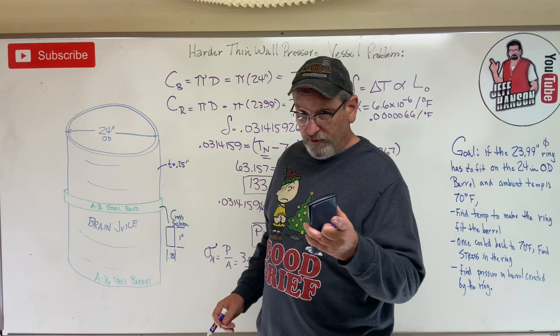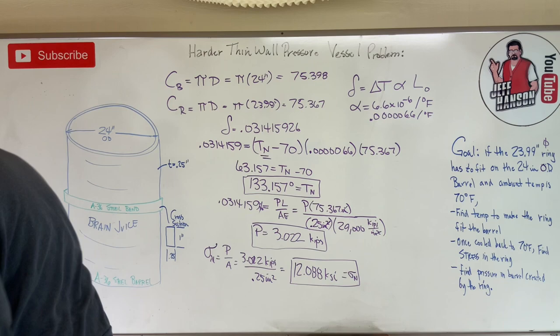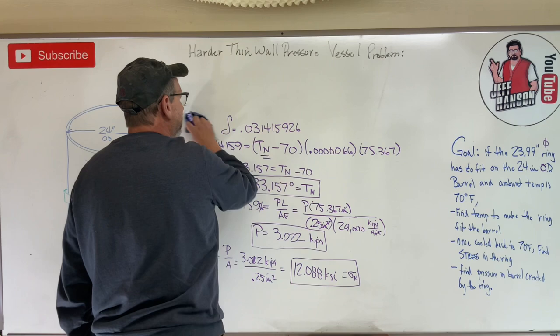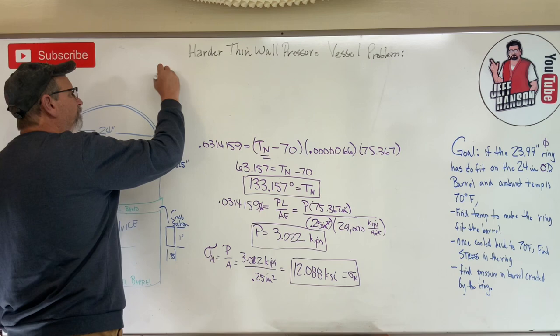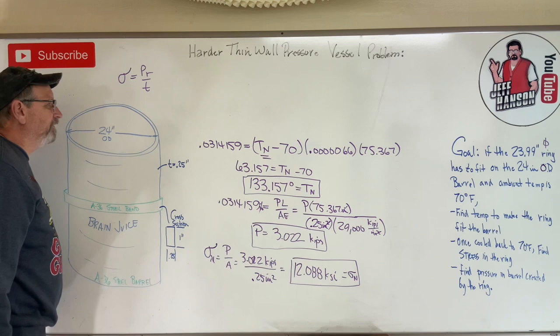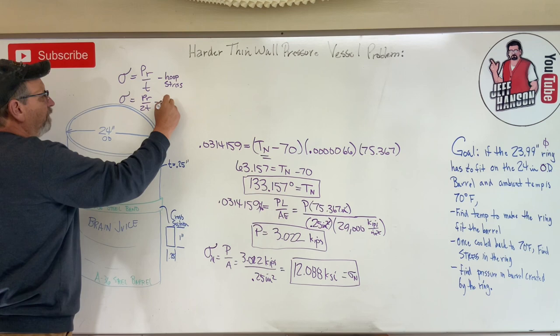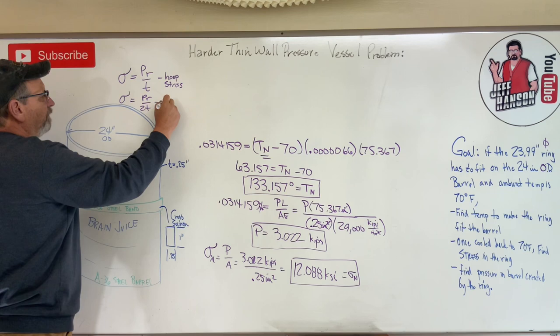Now what is the ring? We're talking thin wall pressure vessels. Remember we had two equations for thin wall pressure vessels? The two equations were σ = PR/T - remember that was hoop stress - and we had σ = PR/2T, which we called longitudinal stress.